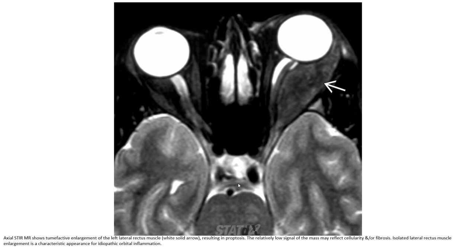Axial post-contrast MRI shows tumor-like enlargement of the left lateral rectus muscle. The relative low signal of the mass may reflect cellularity and/or fibrosis. Isolated lateral rectus muscle enlargement is a characteristic finding of idiopathic orbital inflammation.